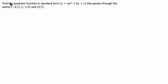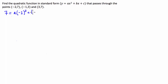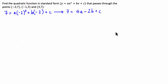Let's start by substituting each of these coordinate points into the function y = ax² + bx + c. Starting with the first point, (-2, 7), we get 7 = a times (-2)² + b times (-2) + c. Multiplying out the brackets, we get 7 = 4a - 2b + c.